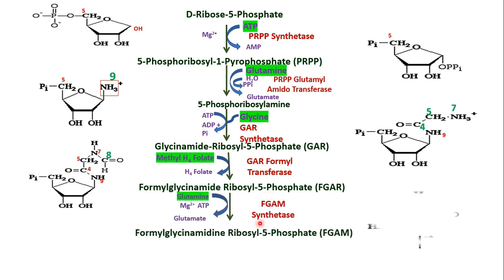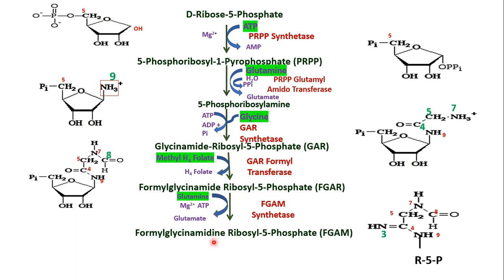Next, glutamine transfers a second amide nitrogen to form formyl glycine amide. Looking at the structure, it was glycine amide; now a second amino group is added — making three amino groups total. It becomes formyl glycine amide in ribosyl 5-phosphate, abbreviated as FGAM. The enzyme is FGAM synthetase and it requires ATP.